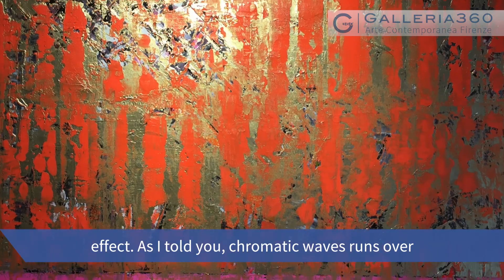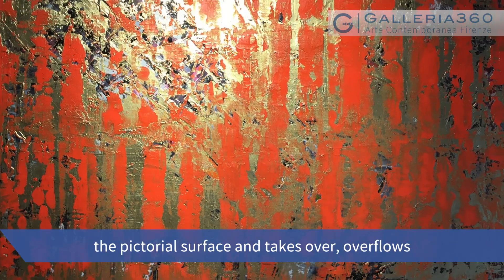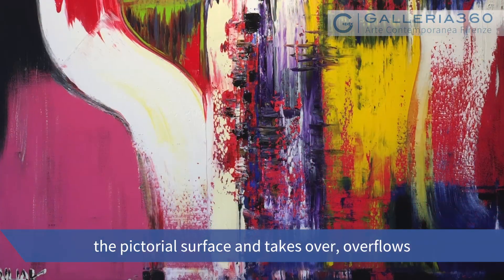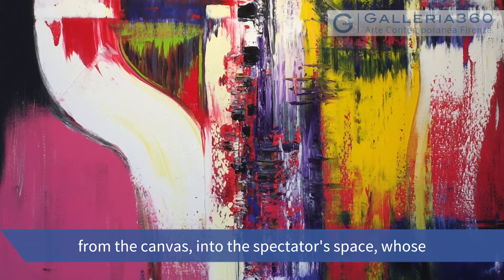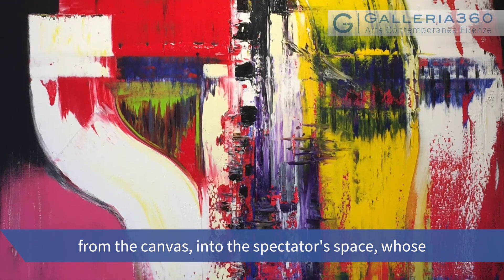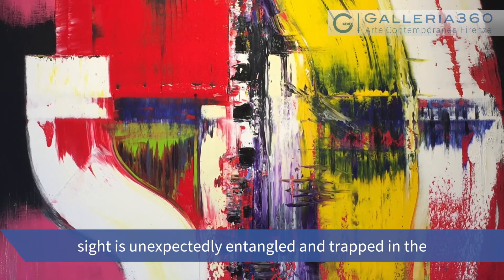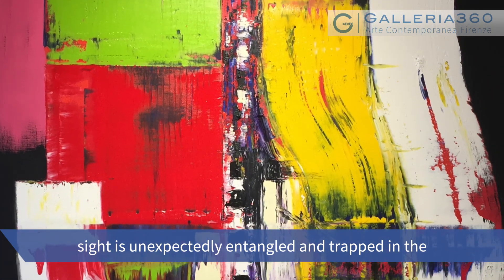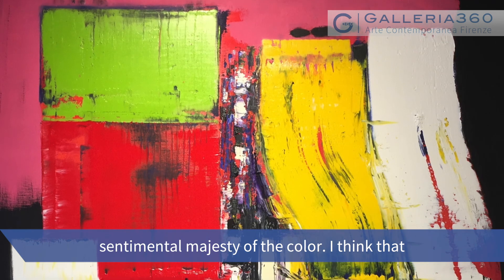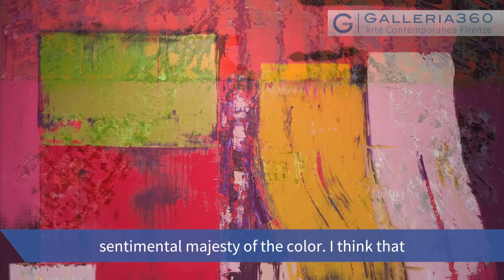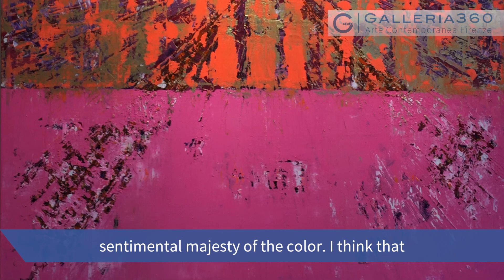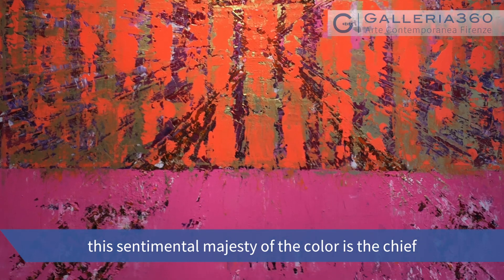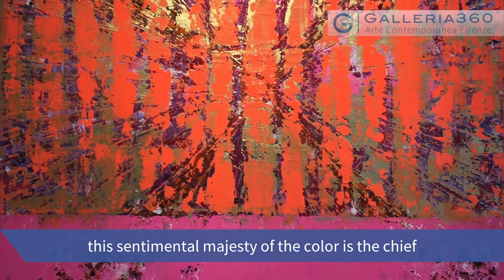A mio parere c'è anche questo straordinario effetto quasi ambientale del colore, ottenuto con queste ondate cromatiche che investono la superficie pittorica ma in realtà dilagano e straripano oltre la tela, invadendo lo spazio dell'osservatore il cui sguardo viene quasi inaspettatamente intrappolato in questa imponenza sentimentale del colore. L'imponenza sentimentale del colore è l'elemento chiave dell'arte di Wack.